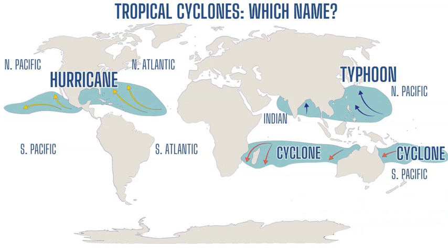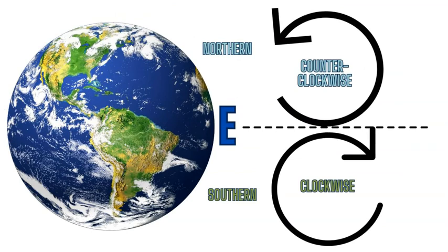So different names based on the different geographic locations of where these low pressure cyclones form. In the northern hemisphere they're going to rotate in a counterclockwise direction, and in the southern hemisphere they're going to rotate in a clockwise direction.